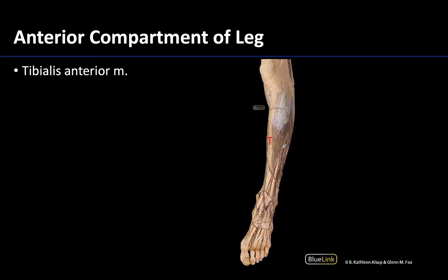When looking at a more superficial dissection of the anterior compartment of the leg, the dominant muscle that is visible is the tibialis anterior — sometimes you hear 'anterior tibialis,' same muscle. This is the dominant muscle, and from this particular view you can see the tendon extending medially here.